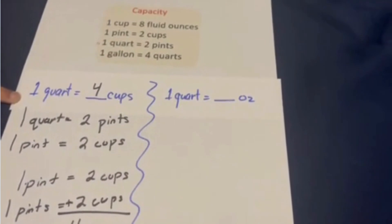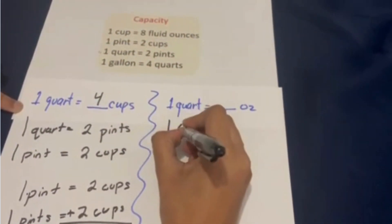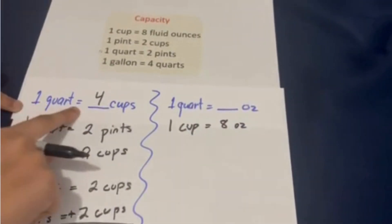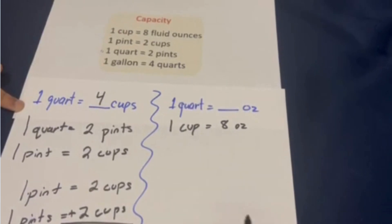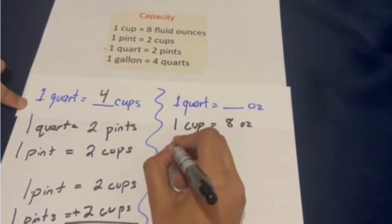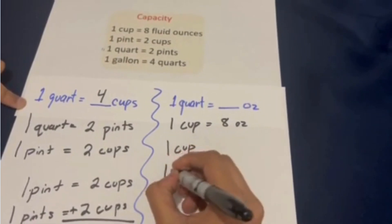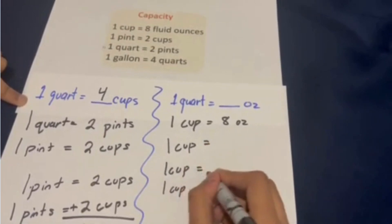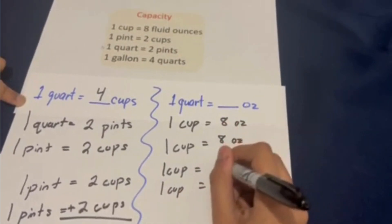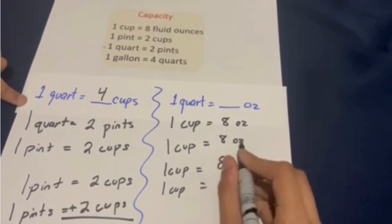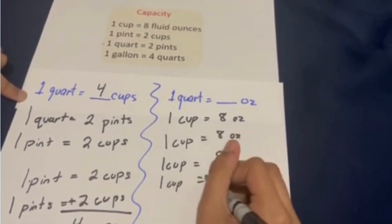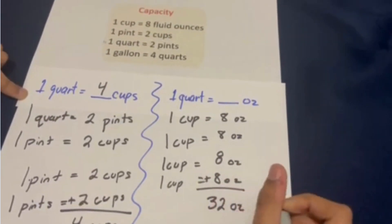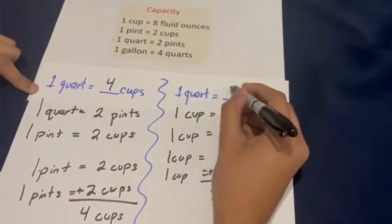But now we've got to do ounces. Since we know that one cup is eight ounces, and that one quart is four cups, we're going to have to do one cup plus one cup plus one cup plus one cup, or eight ounces plus eight ounces plus eight ounces plus eight ounces. If you add them all up, it is 32 ounces — meaning that one quart is equivalent to 32 ounces.